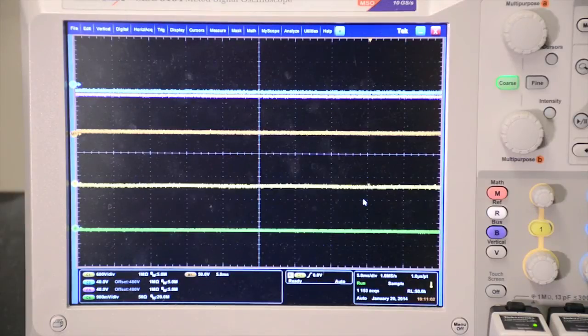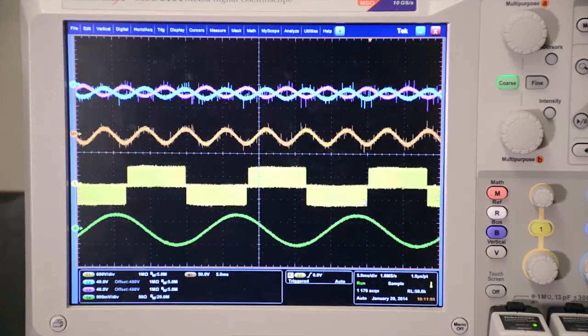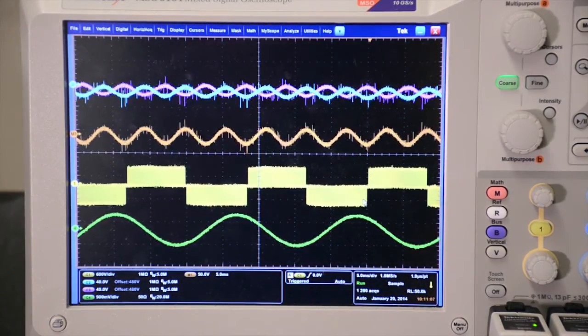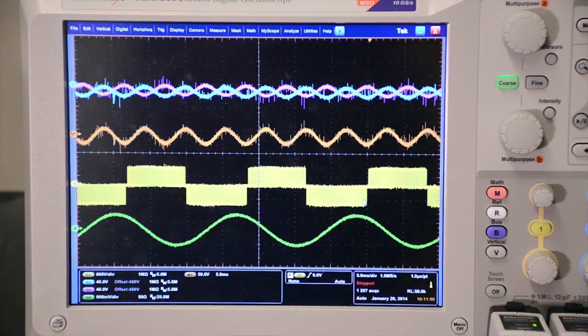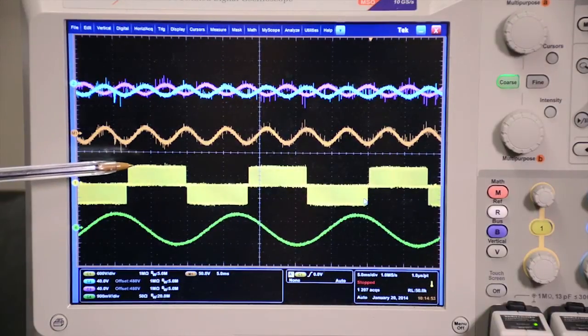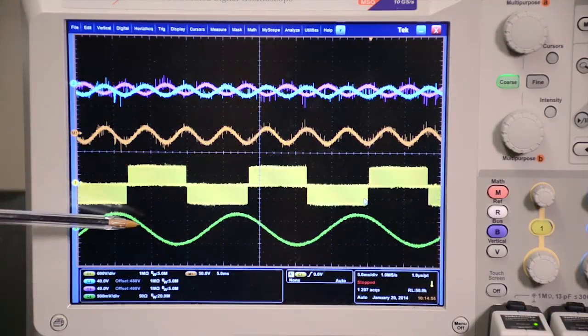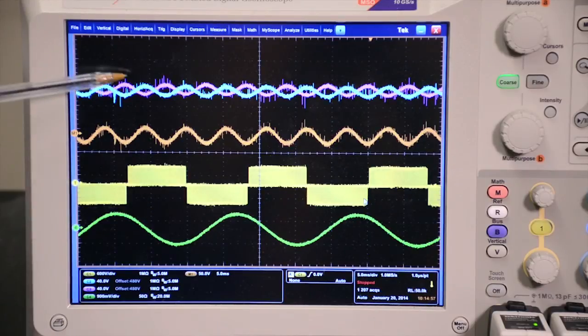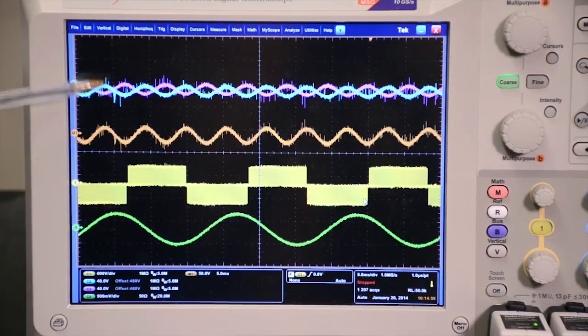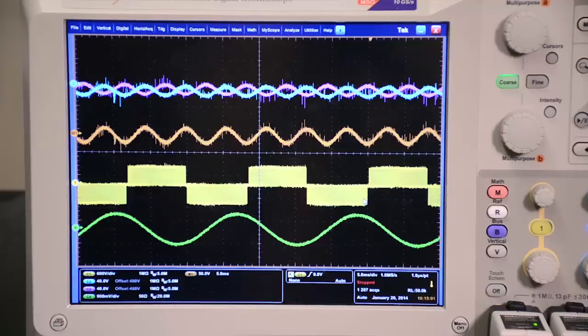The neutral point voltage with SPWM modulation is then tested as comparison. The yellow curves are phase A output voltage and the green curves are phase A current.